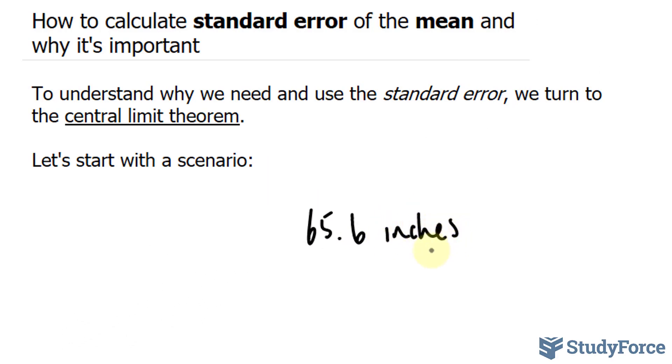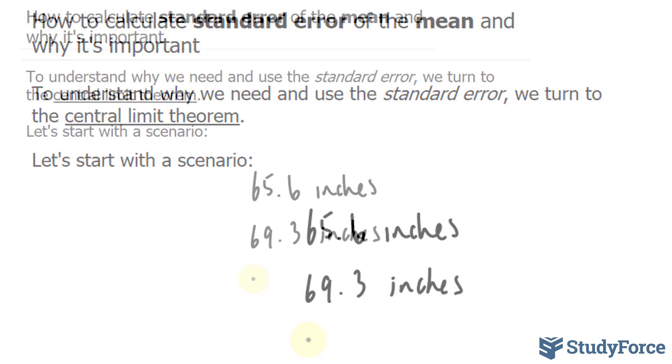Then you select another 40 students at random, and you find that their average height is 69.3 inches. And finally, you do one more draw of 40 students, and you find that their height happens to be 72 inches.